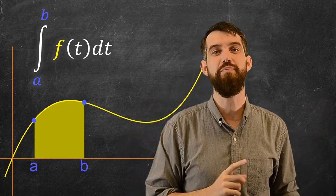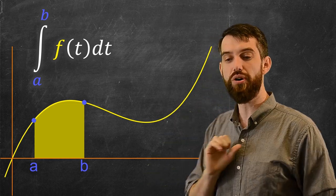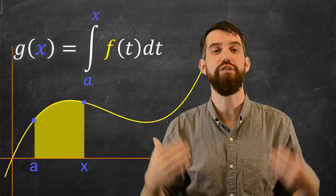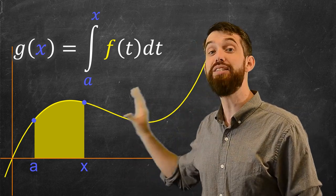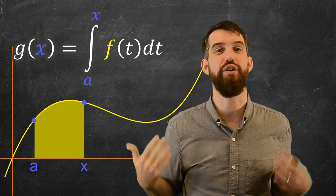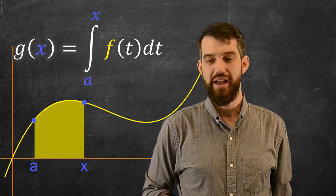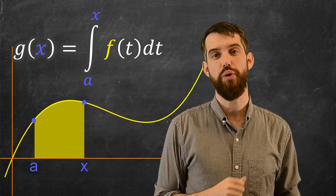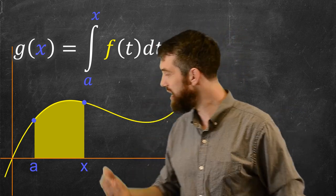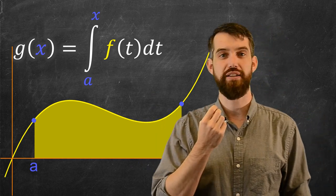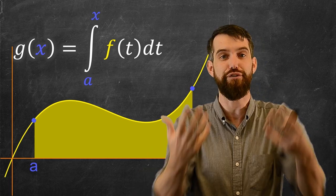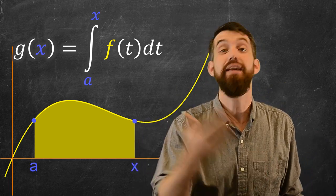But what if instead of a to b, I make a slight change and say it's the integral from a up to x? I'm now going to call it a function g(x), because indeed this is a function of x. For every value of x, you get a different number out. The a is some fixed thing, like 3, and you could ask from 3 up to any other value of x. For every value of x, you get a different region you're considering, and you get a different answer for what that area is — g is a function of x.